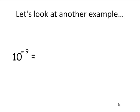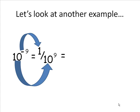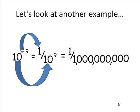We'll take a look at 10 to the negative 9. The negative means that I have 1 in the numerator and the 9 means that in the denominator I have 10 to the ninth. And that's 1 over 1 billion.